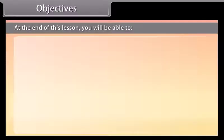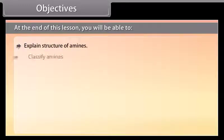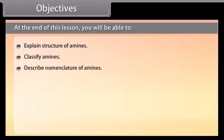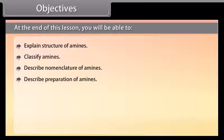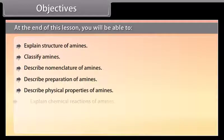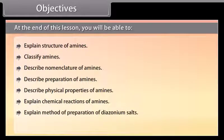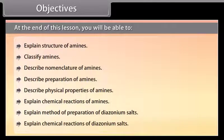Objectives: At the end of this lesson, you will be able to explain the structure of amines, classify amines, describe nomenclature of amines, describe preparation of amines, describe physical properties of amines, explain chemical reactions of amines, explain the method of preparation of diazonium salts, and explain chemical reactions of diazonium salts.